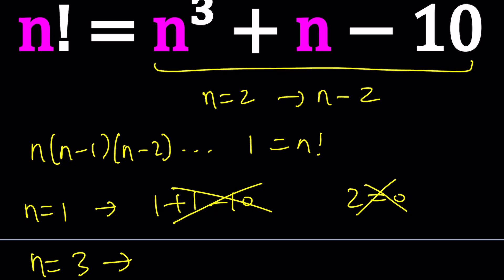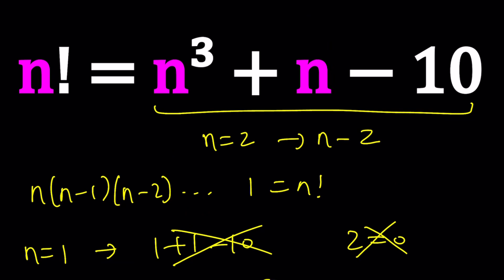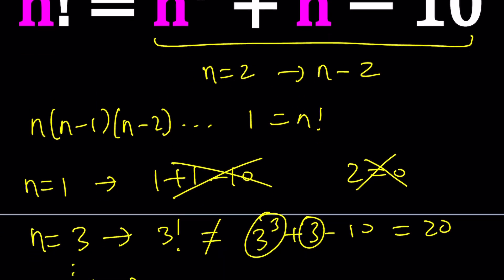Let's go ahead and test it out. If n is equal to 3, we're going to get 3 factorial on the left. And on the right, we're going to get 3 cubed plus 3 minus 10. This is 27. That's 30. That's 20. Uh-oh, they're not equal. Too bad. It didn't work. But guess what? Factorials grow faster than polynomials. n factorial is going to beat n cubed. But not right away. At the beginning, this is going to be bigger. So what do you do? You just keep testing the numbers. n equals 4. Let's do, okay, last one. I'm not going to check any more numbers.